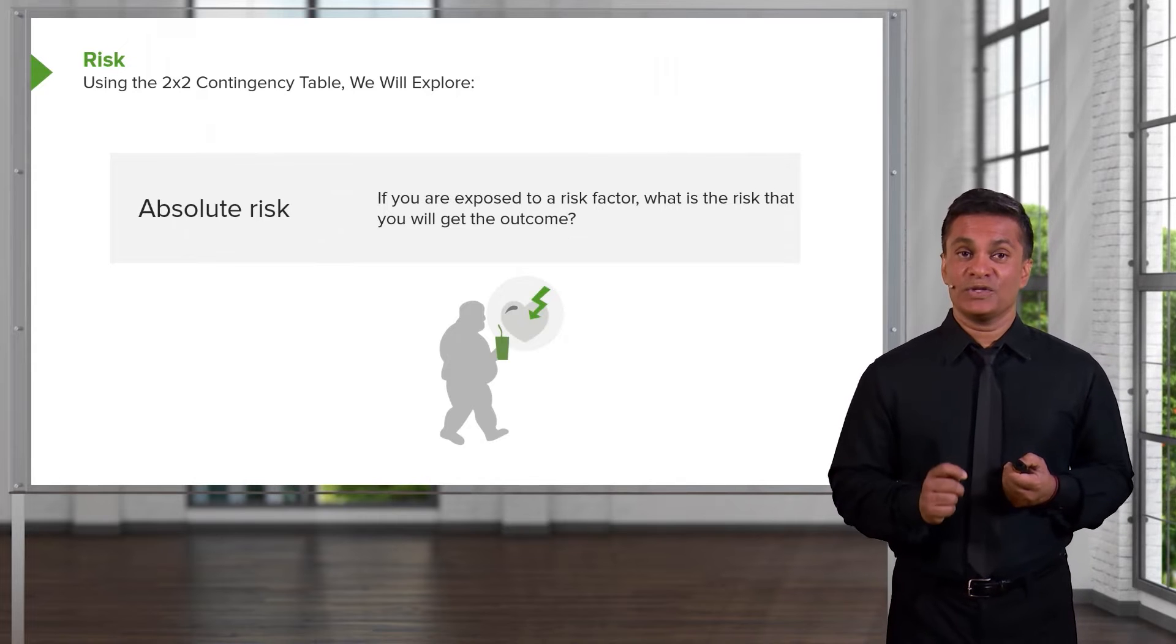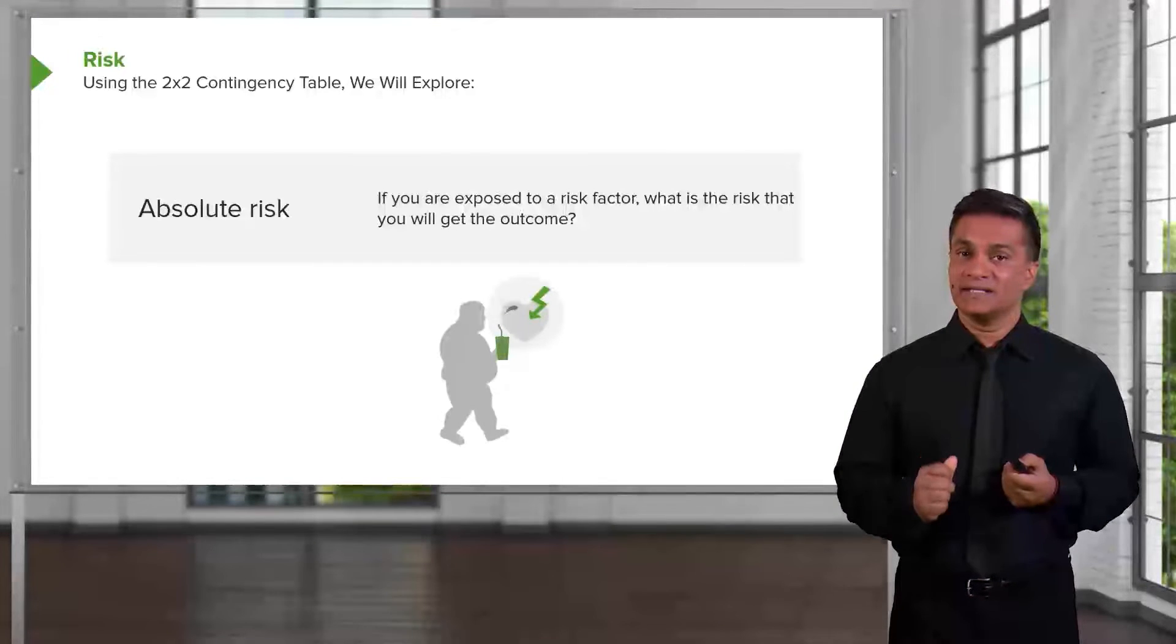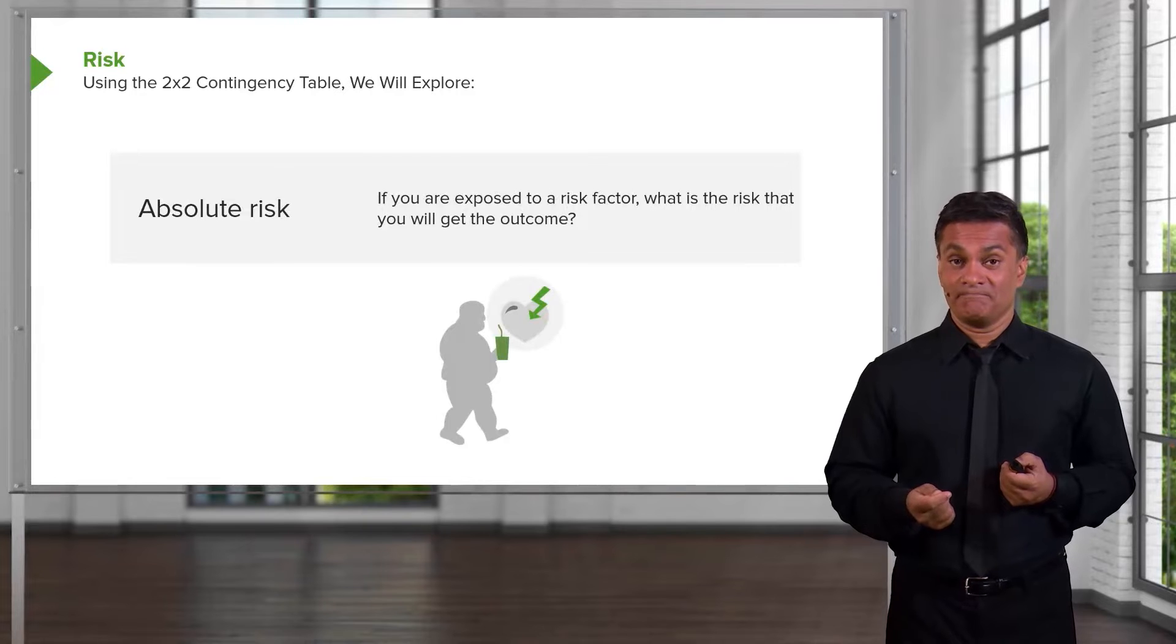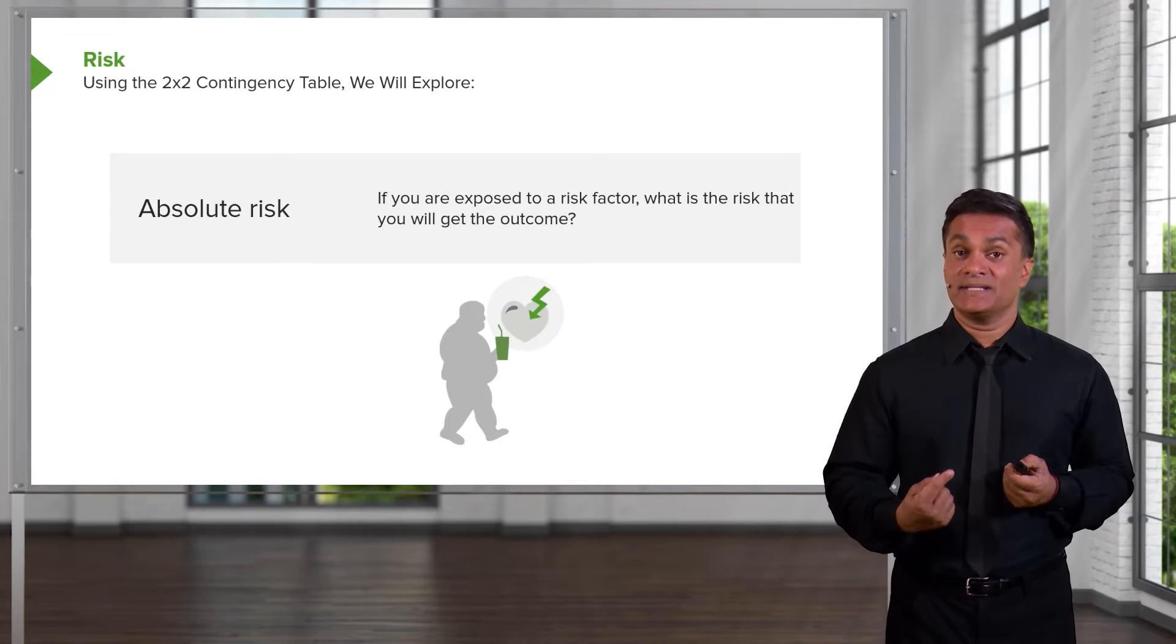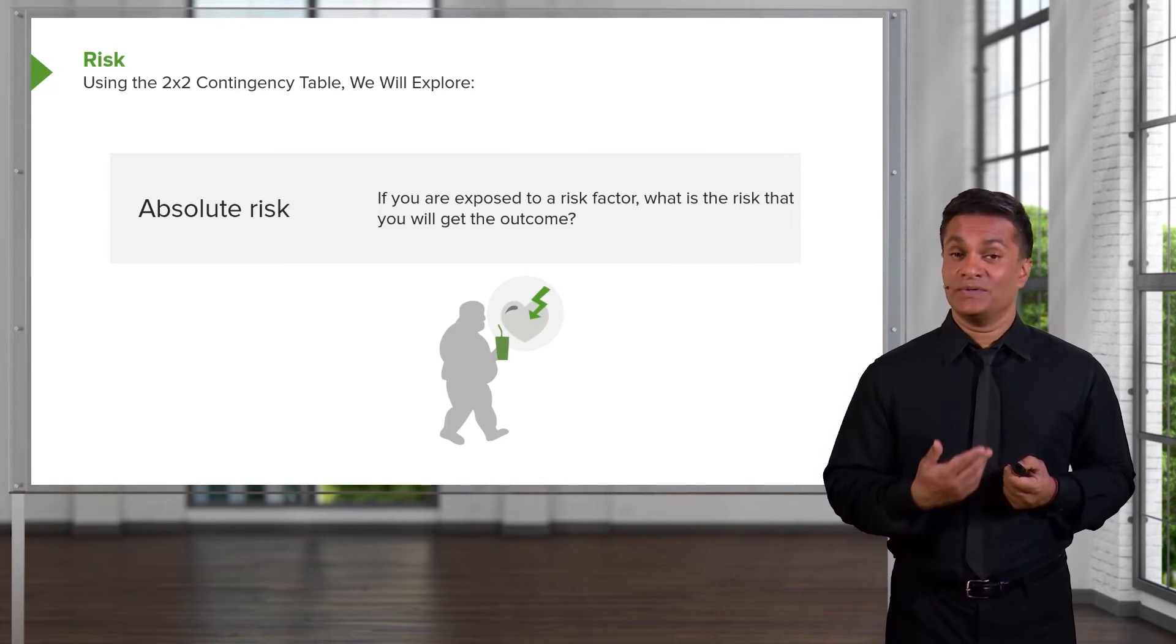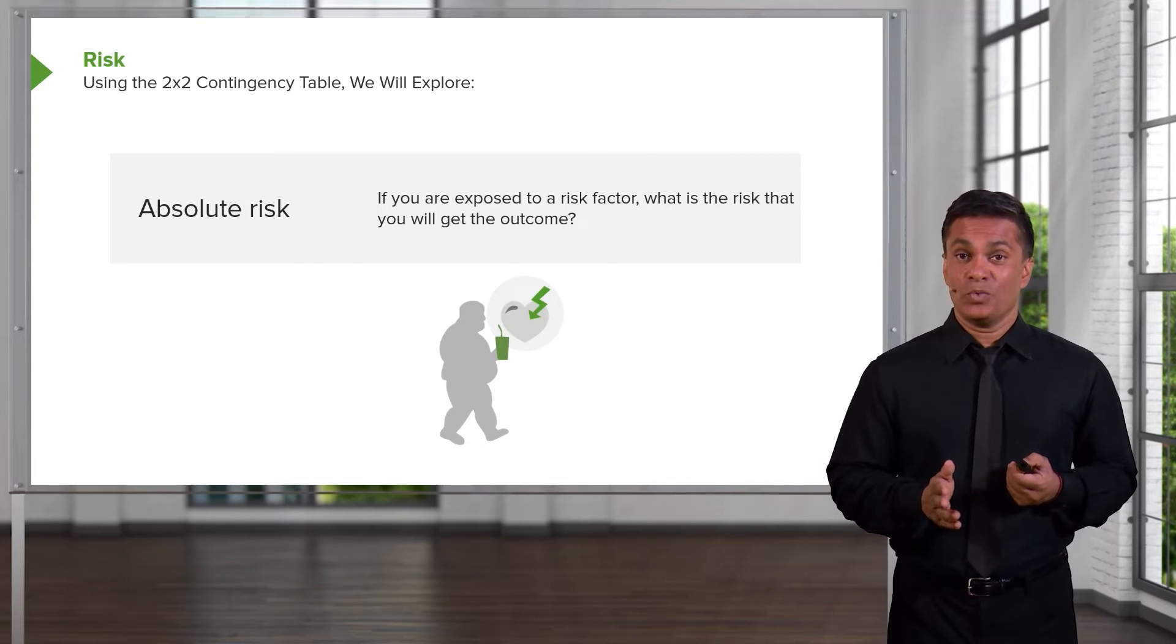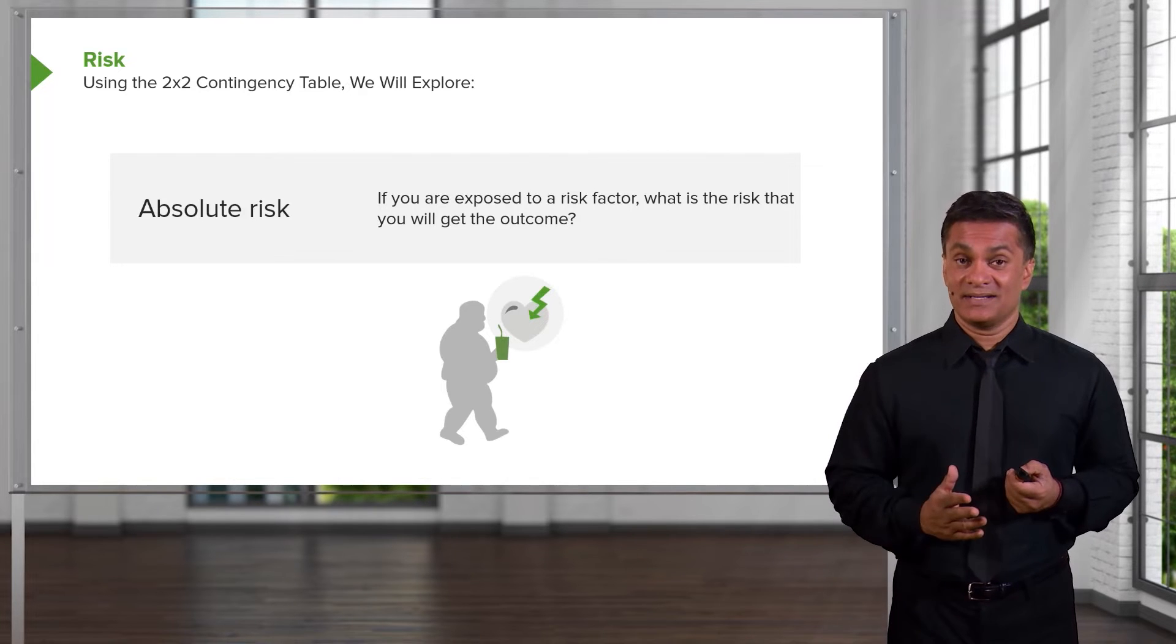Some important concepts to consider. The first is absolute risk. When we talk about risk, we're talking about incidence. You may recall that incidence is a proportion of new cases that we encounter. If I start smoking and over some time I get lung cancer, my experience represents a single incident case because it's new. If I had cancer before I started smoking, it's not incident because it was already there. The absolute risk is if you're exposed to a factor, what's the risk that you'll get that outcome? If I'm a smoker, what's the risk that I will get lung cancer? That's the absolute risk.